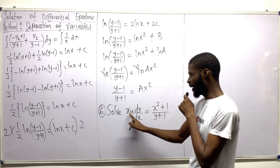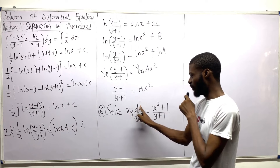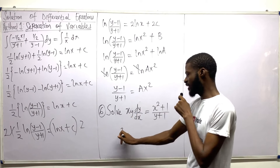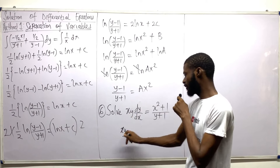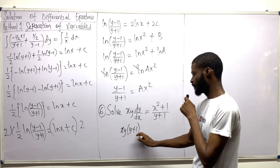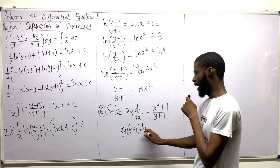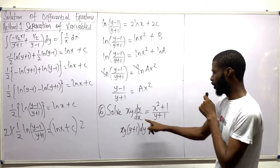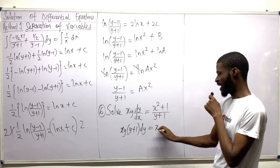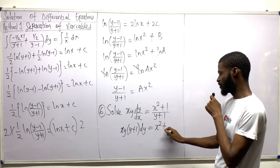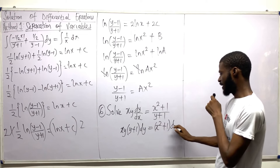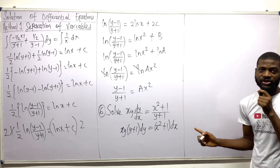So this will become — remember that y is going to be with the top. This is x, y multiplied by y plus 1, dy equals this and this go together. So this is x squared plus 1 dx. That's what we're going to be having.